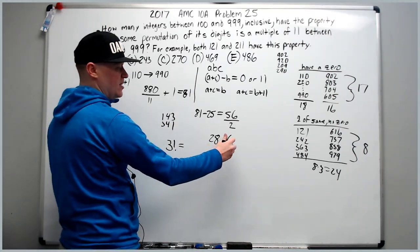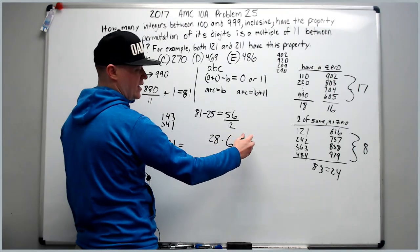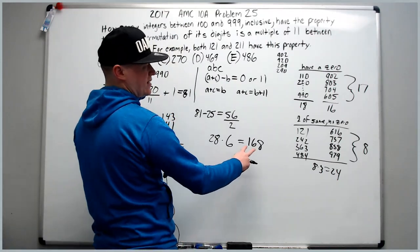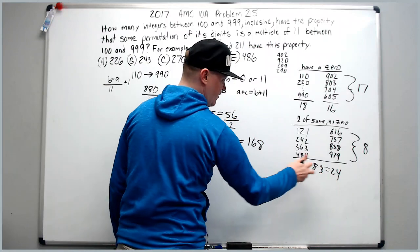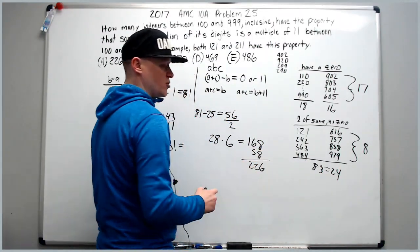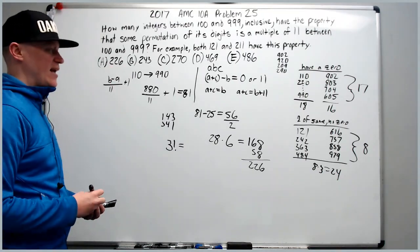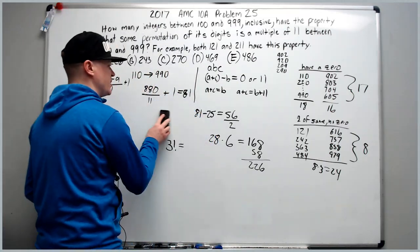And those 28 can be multiplied by 6. Why 6? Because it's 3 factorial. There's three numbers to be arranged. There's three factorial arrangements. 28 times 6, 6 times 20 is 120, plus 48 is 168. And so we can now add 168, and we've got 34 here and 24 here. That's 58. Add to get 226. Great! That's a very efficient solution, and it works. And if you can think of it, you're good. But my question is,